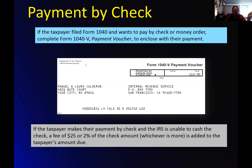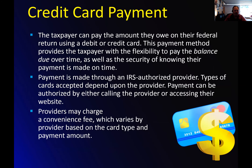For payment by check, you use Form 1040-V — a check voucher sent in with the return. If the check bounces, it's twenty-five dollars or two percent of the check amount, whichever is more — not whichever is less. For credit card or debit card payment, you can pay right over the phone through an IRS authorized provider using electronic funds transfer. They take Mastercard, Visa, American Express. They charge a convenience fee, and each provider charges a little bit different.